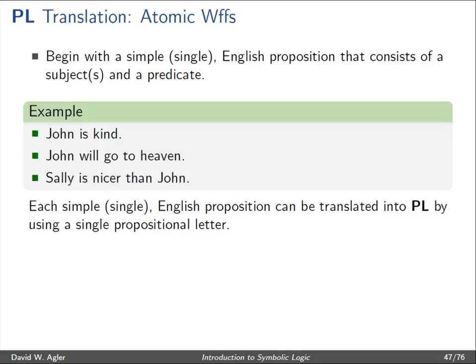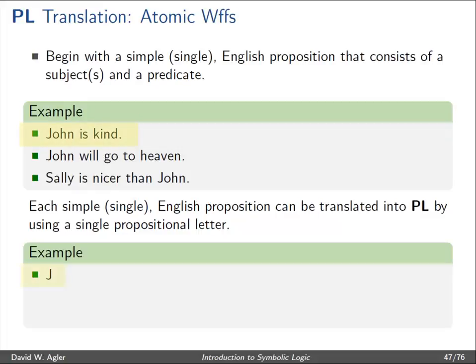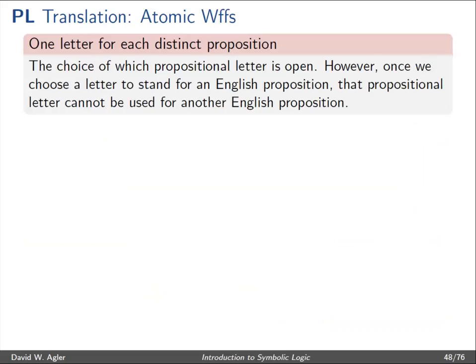Each simple, single English proposition can be translated into the language of propositional logic by using a single propositional letter. For example, we can represent or symbolize or abbreviate "John is kind" with a J, "John will go to heaven" with H, and "Sally is nicer than John" with S. In translating English propositions into the language of propositional logic, the choice of letter you choose to translate into is open — it's arbitrary, it's up to you.